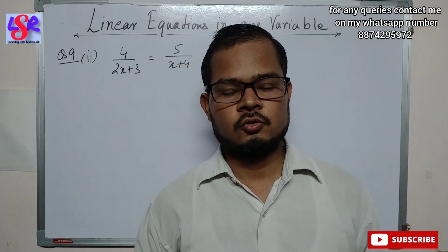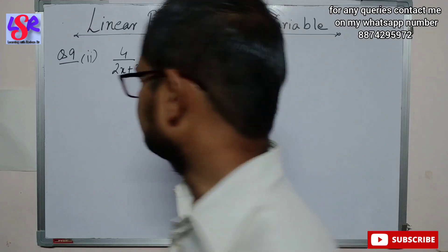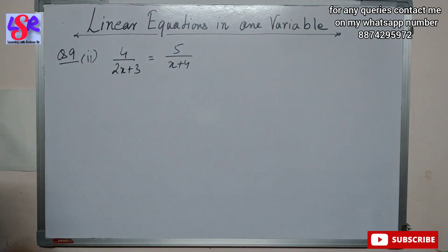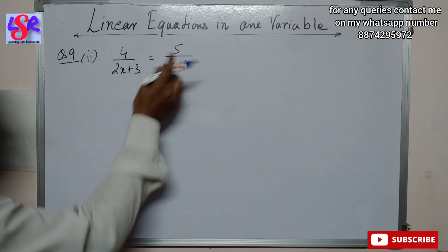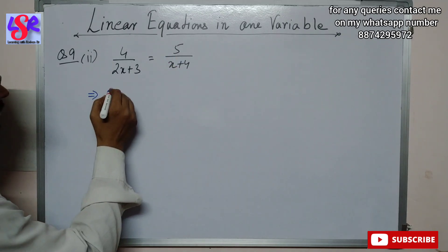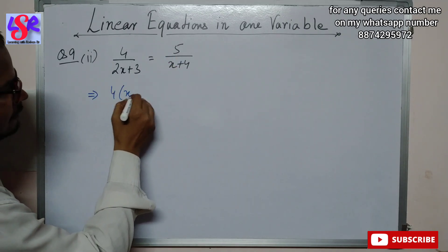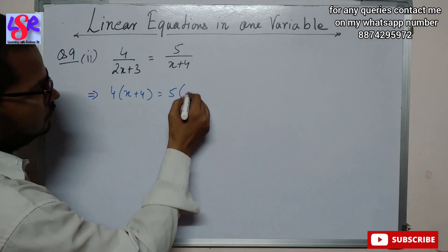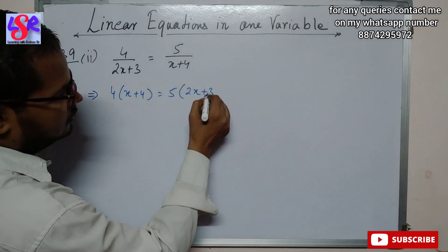Now we are moving to question number 9, second part. Here we are having 4/(2x + 3) = 5/(x + 4). Cross multiplying: 4 × (x + 4) = 5 × (2x + 3).